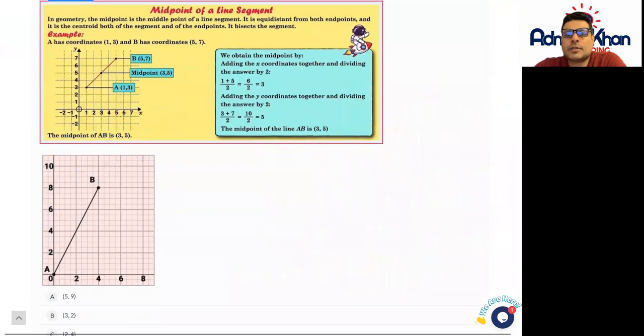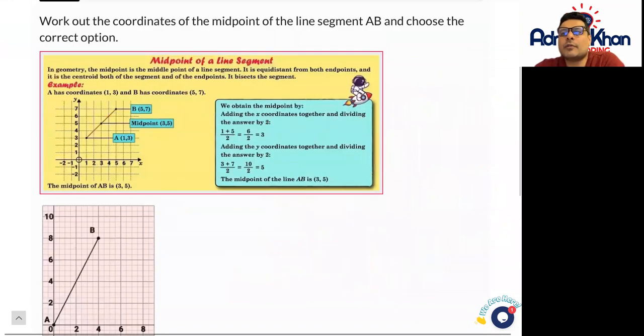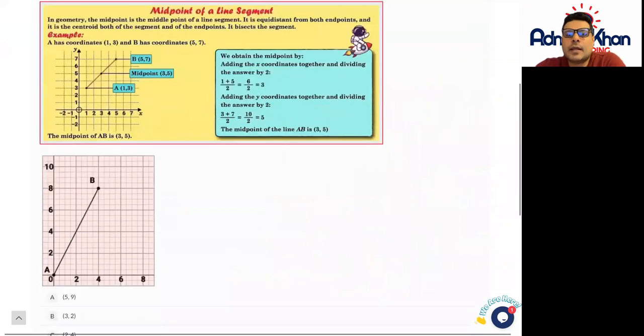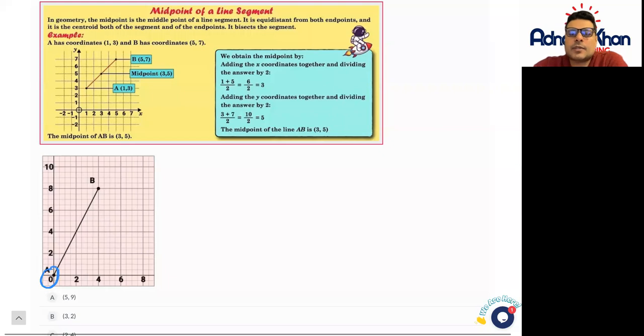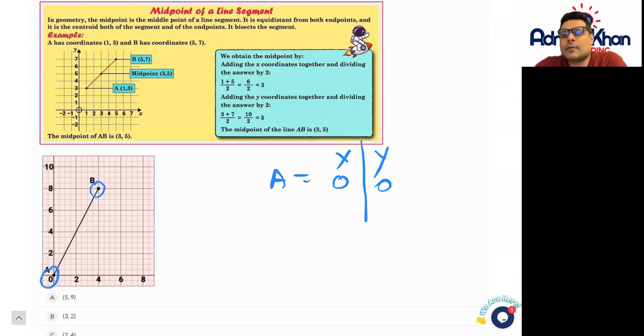In this particular question, work out the coordinates of the midpoint of line segment AB. You've got A at (0, 0), and you've got B as well. A equals (0, 0), and remember we've got to work out the x and y segments first.